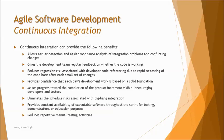CI makes progress toward the completion of the product increment visible — it is traceable, trackable, and monitorable. It eliminates the schedule risk associated with big bang integrations. It provides constant availability of the executable software throughout the sprint for testing, demonstration, and education purposes. It also reduces repetitive manual testing activity because all major complicated tasks are being automated.